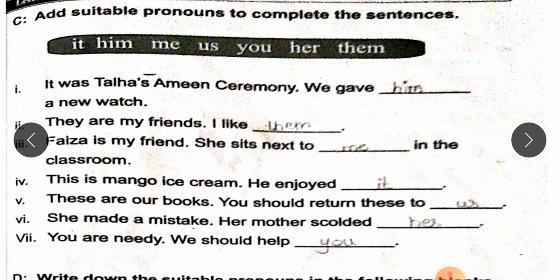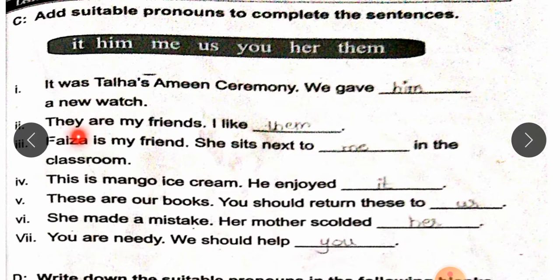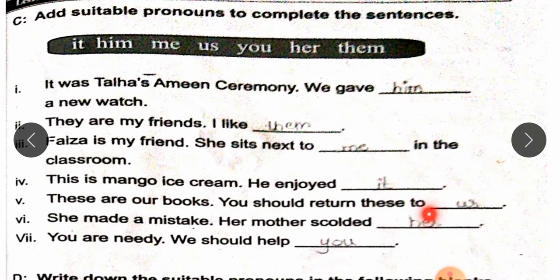Add suitable pronouns to complete the sentences. It was Talha's ameen ceremony — we gave him a new watch. They are my friends — I like them. Faiza is my friend — she sits next to me in the classroom. This is mango ice cream — he enjoyed it. These are our books — you should return these to us. She made a mistake — her mother scolded her. You are needy — we should help you.